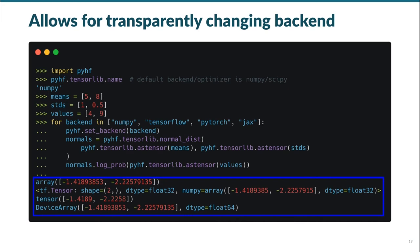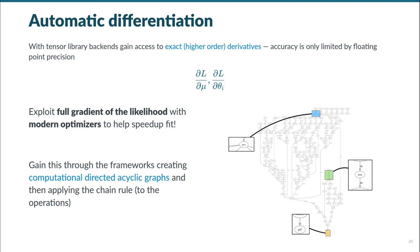Additionally, for the tensor library backends that provide automatic differentiation, we gain access to the full gradient of the likelihood, resulting in our accuracy being limited by floating point precision. We can exploit the full gradient by providing it to the modern optimizers our backends provide to help speed up the fit. It is also worth pointing out that this is made possible by the fact that the backends are constructing computational graphs of our model, as we saw before, and then applying the chain rule to the tensorized operations in these graphs to move the gradients through the graphs along with the data.